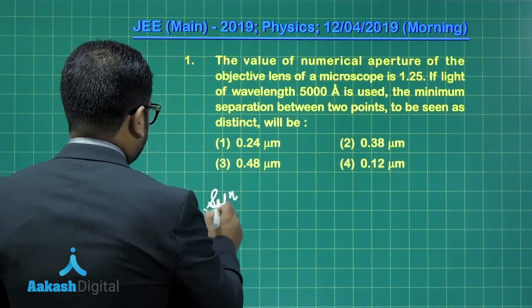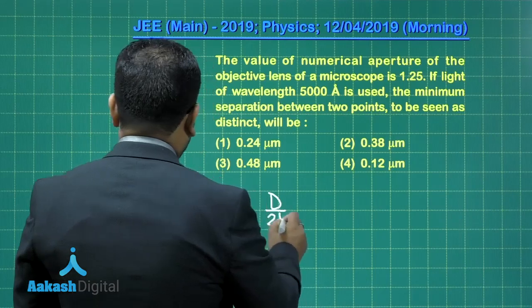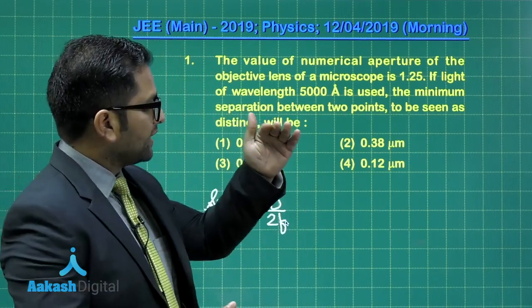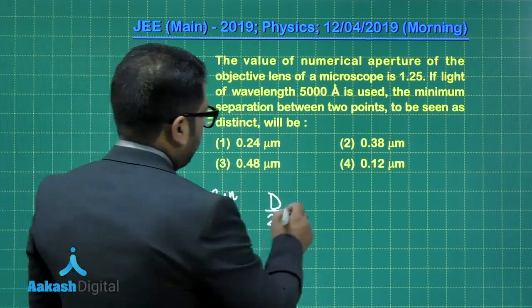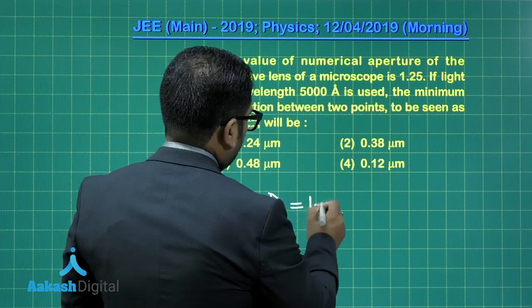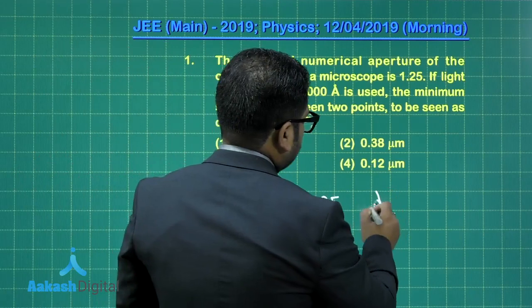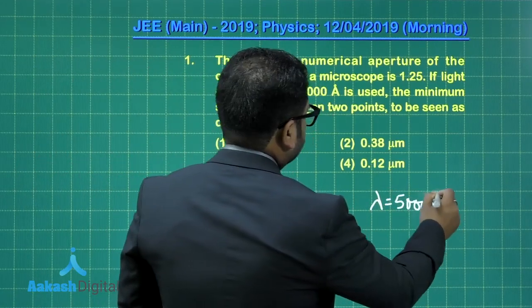So the numerical aperture would be defined by D upon 2F, where D being the diameter of the lens and F being the focal length. So D upon 2F equals 1.25, that's the first thing. The wavelength of light has been given, that's 5000 angstrom.